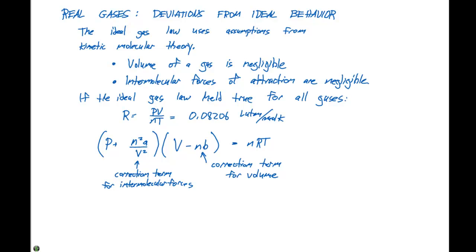If A and B are zero, then the ideal gas law would be obeyed. So if A equals zero and B equals zero,